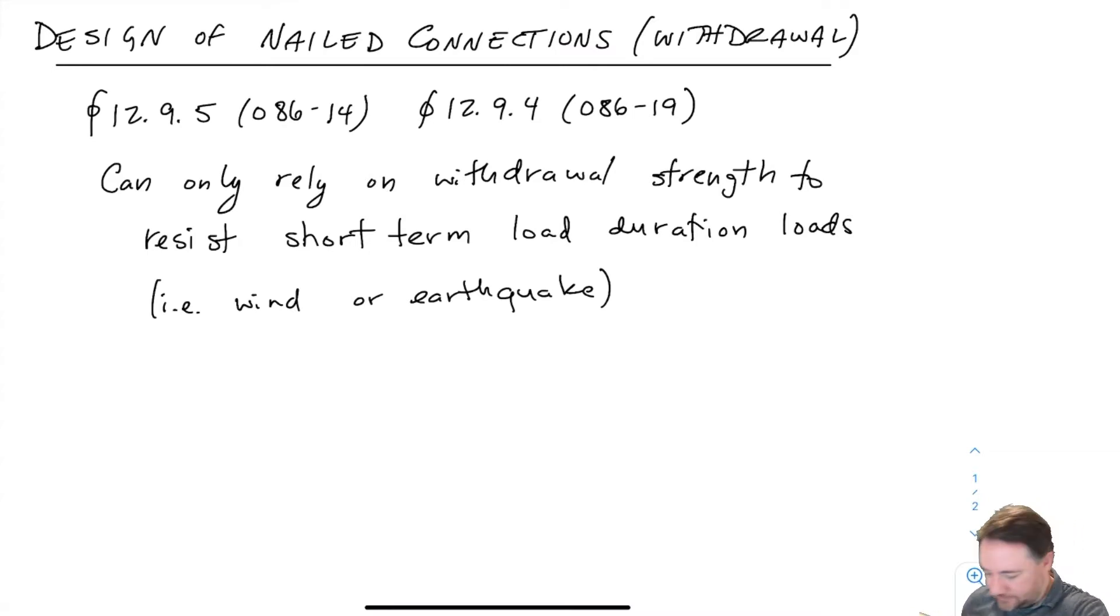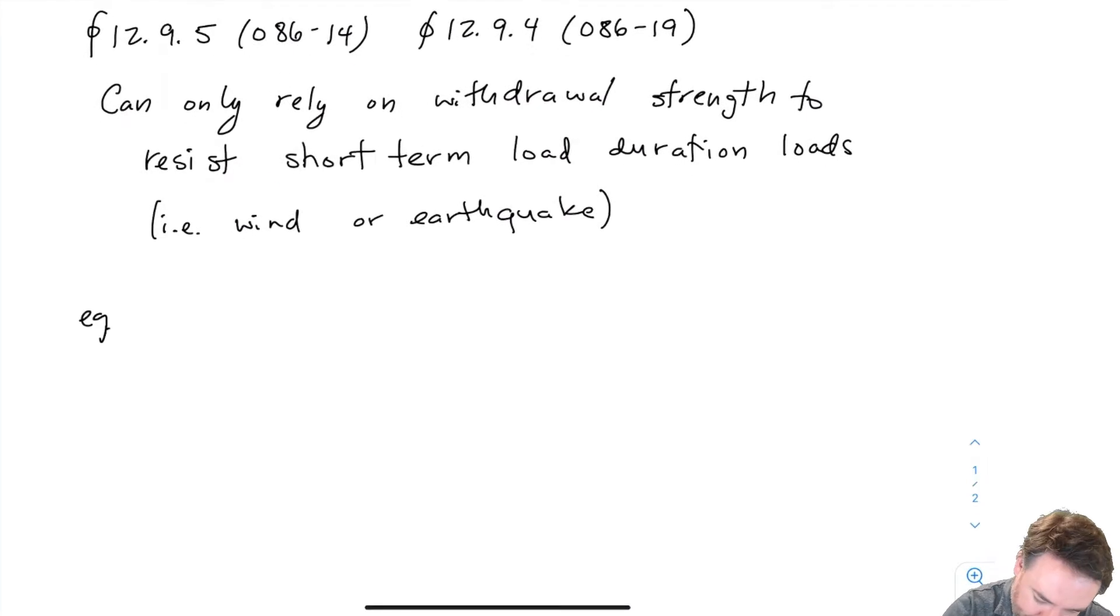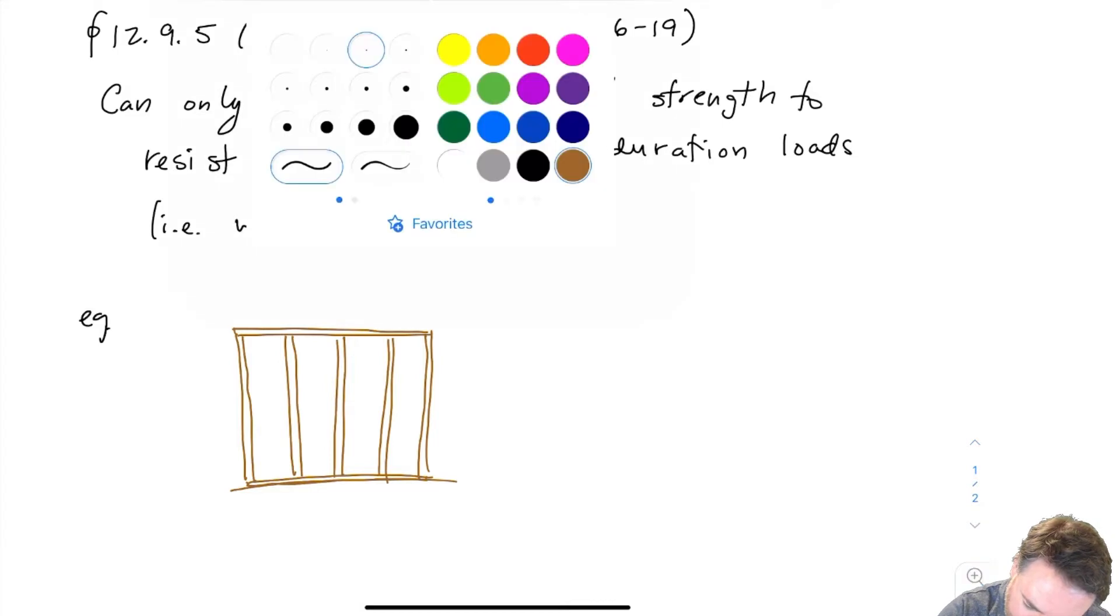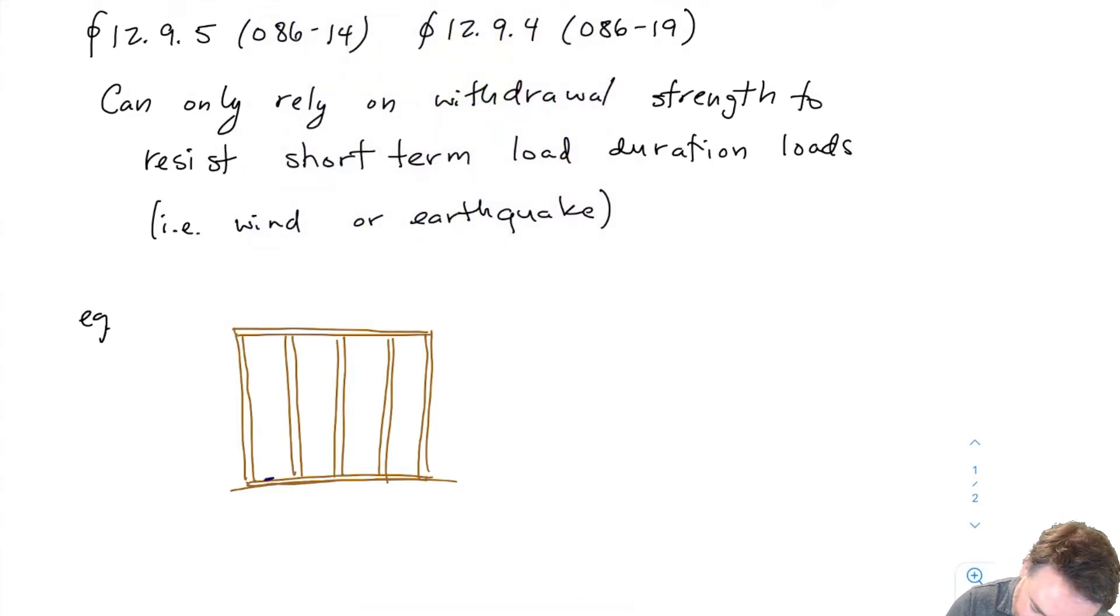So let me draw a couple of those scenarios what they might look like. Okay, so this is not something that would commonly happen but if I had a nail that came down like this, this is not really a design that you would see.